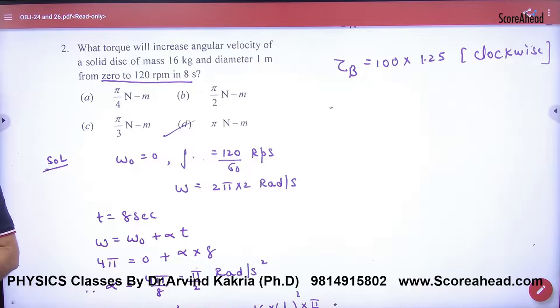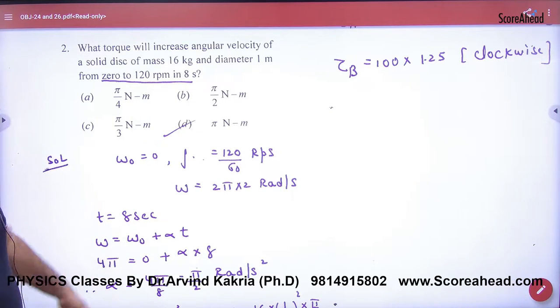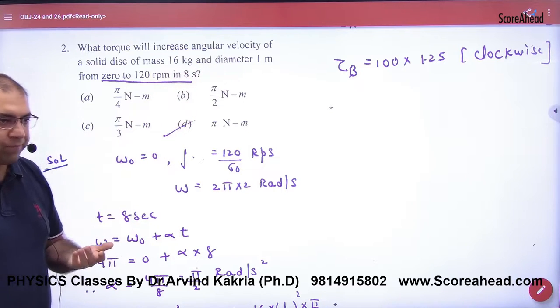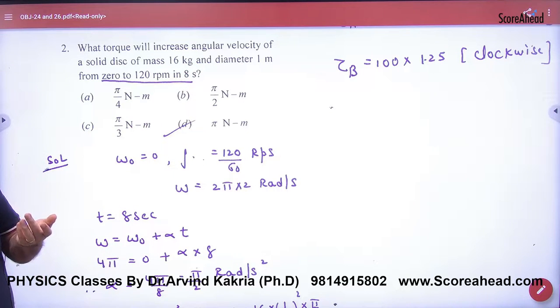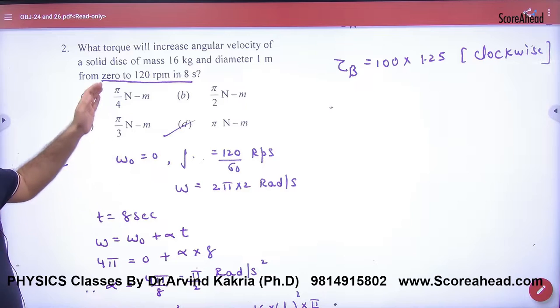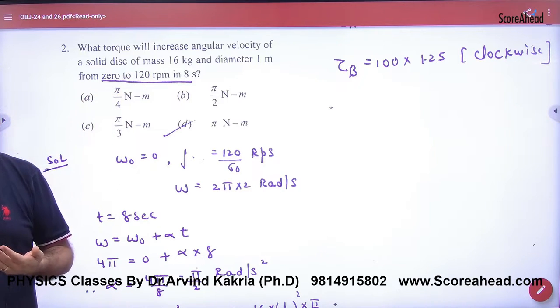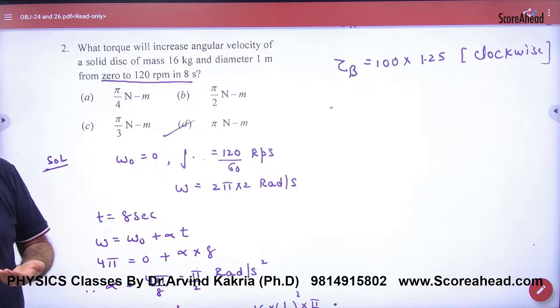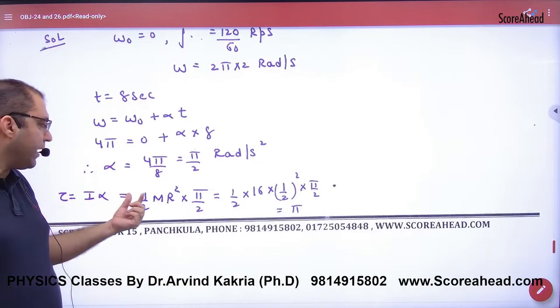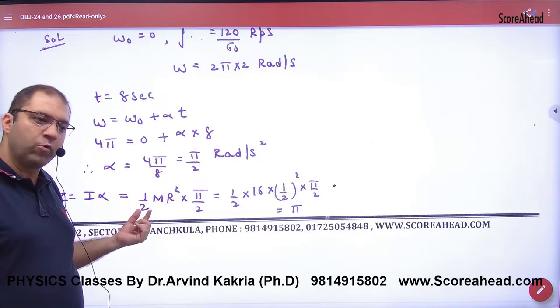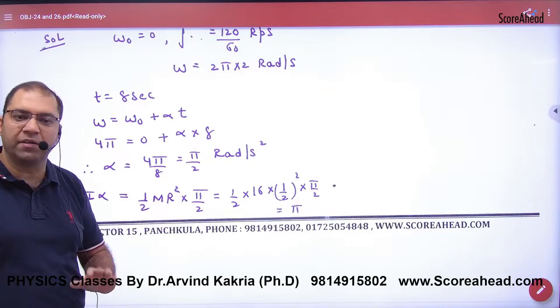The second problem is what torque will increase angular velocity of a solid disk which mass and radius both known. So I will take off the disk from half mR square, from 0 to 120 rpm. What is the frequency? If you want to take off the torque, what is I alpha? I disk, you know half mR square. What do you want to take off? Alpha.